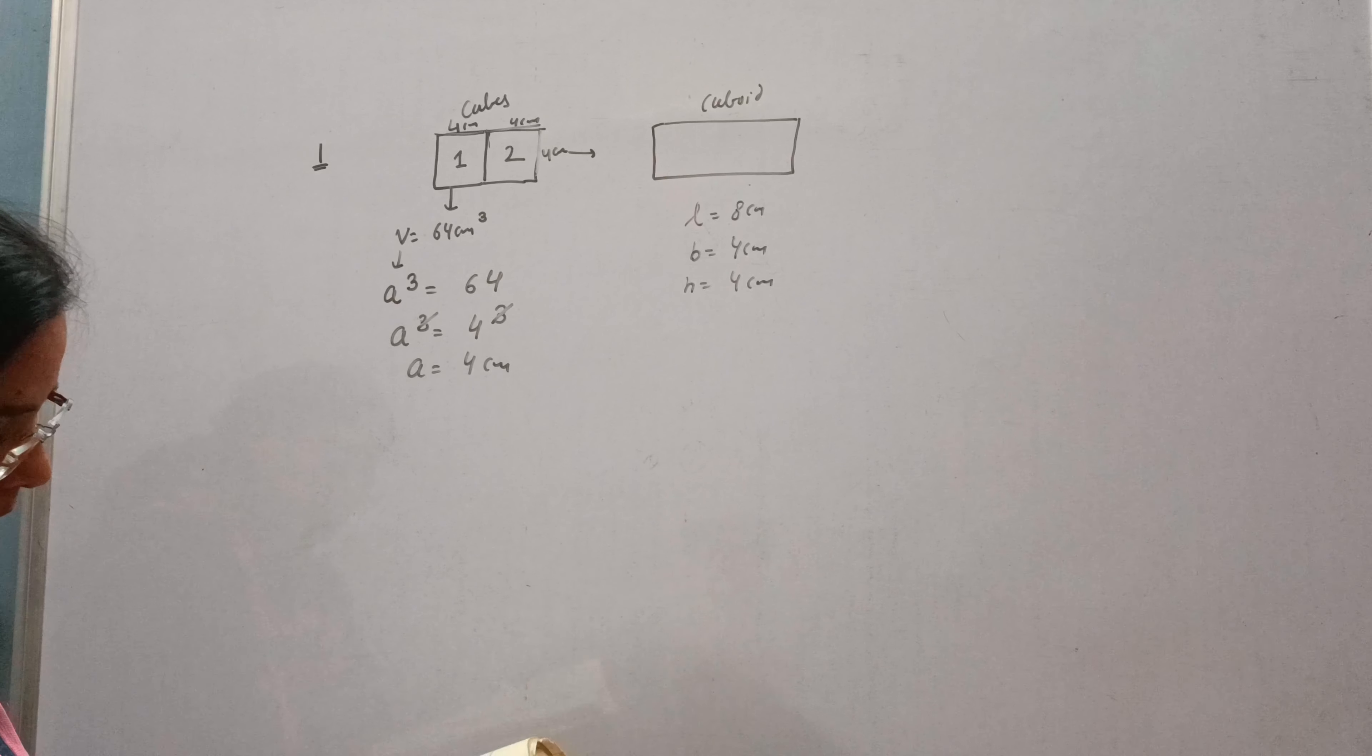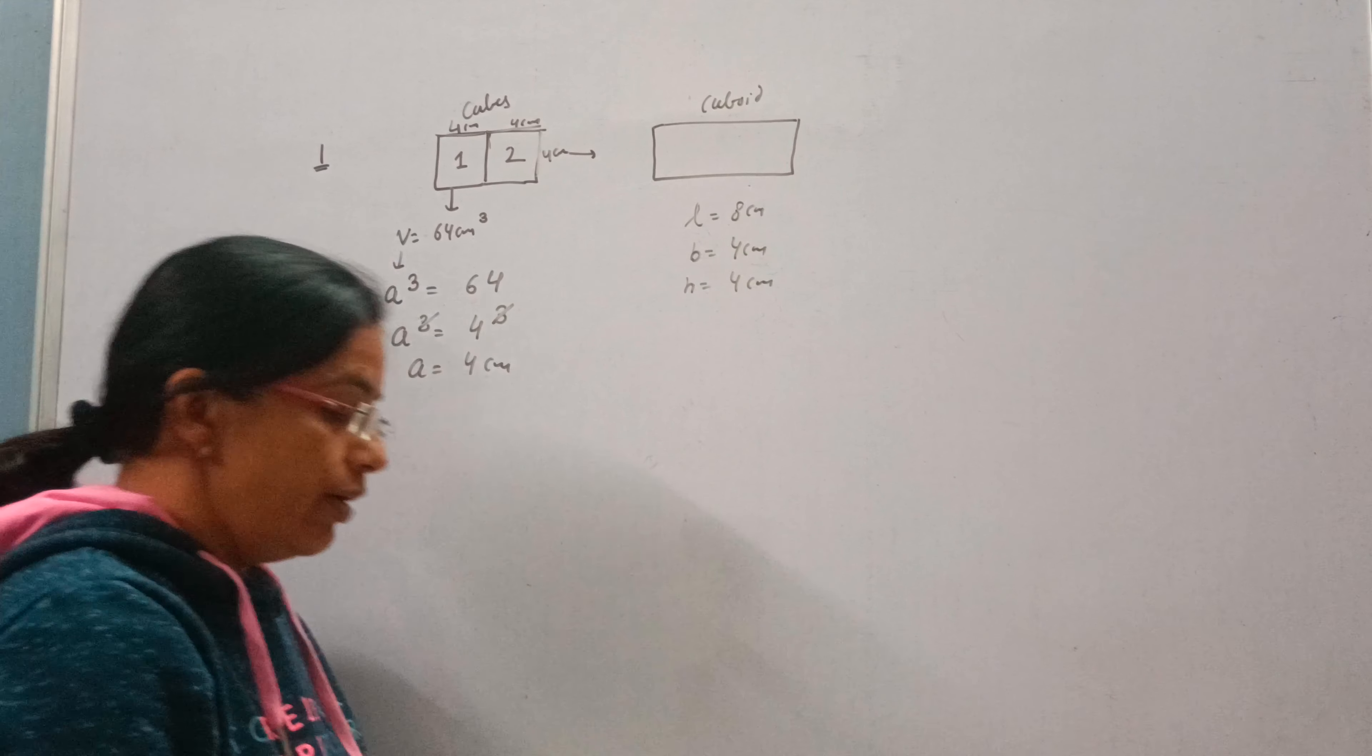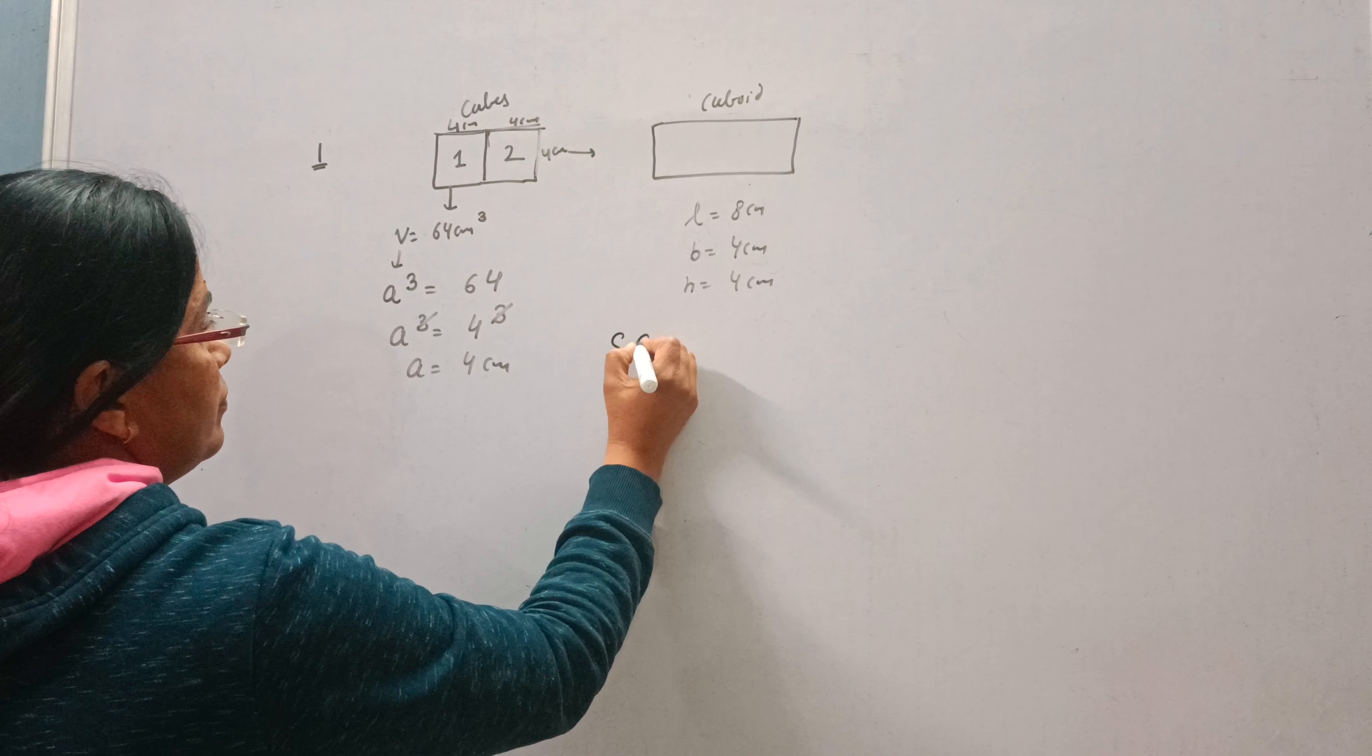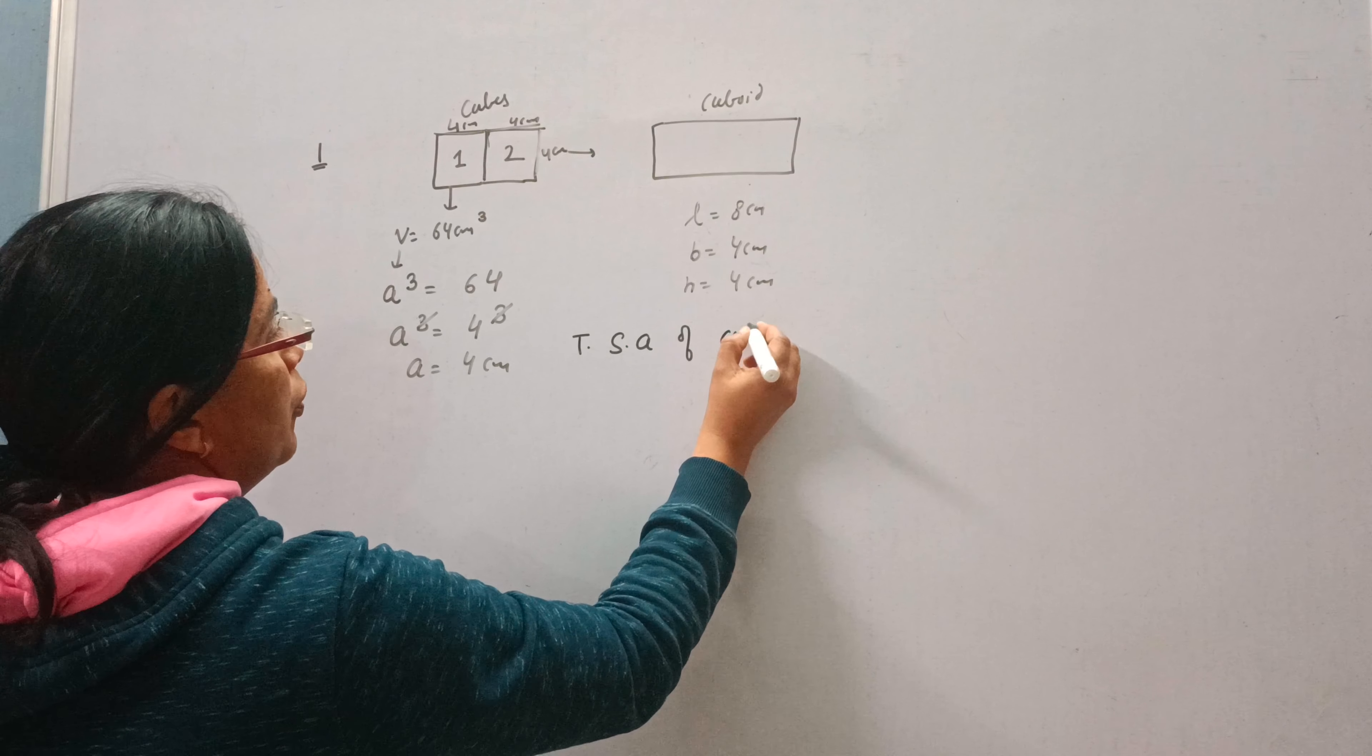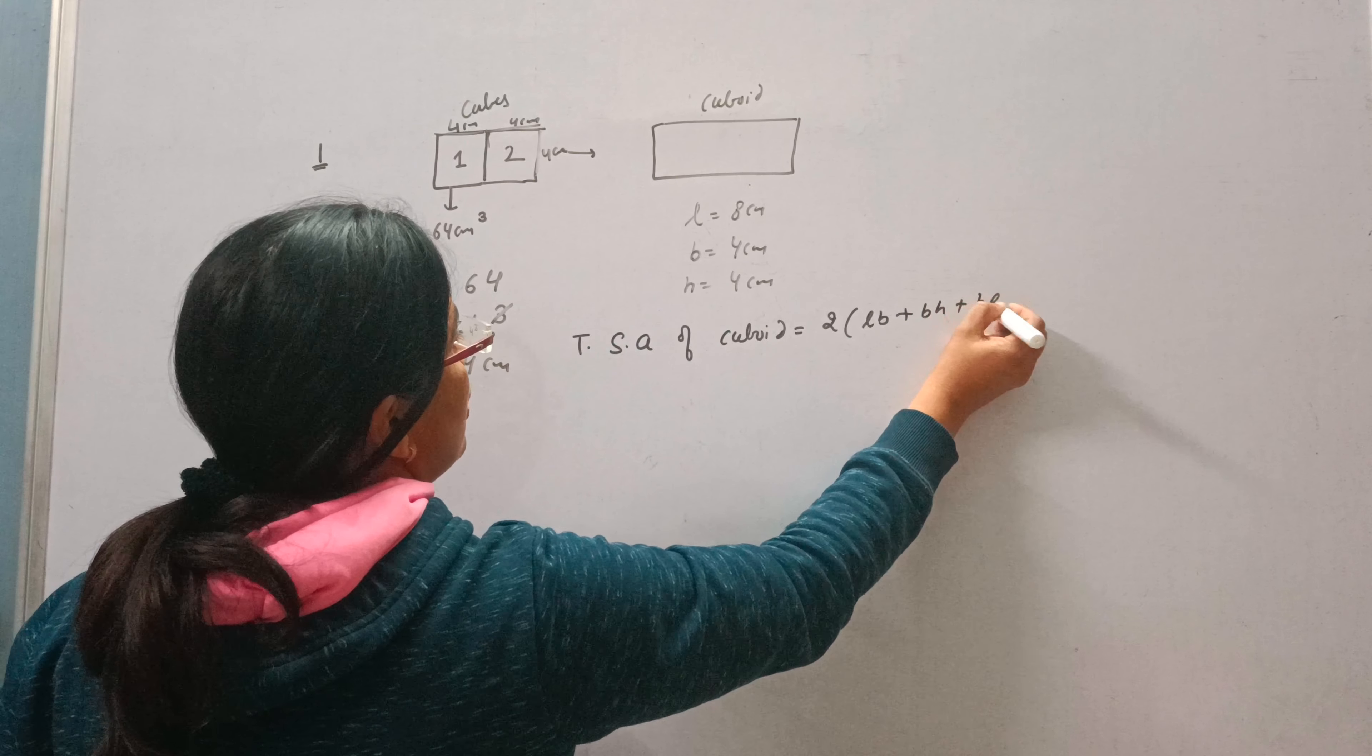Now we need to find surface area of the resulting cuboid. So we need to find the surface area of this cuboid. Now we will apply the formula. Surface area means total surface area of cuboid we need to find. That is 2 into (LB plus BH plus HL).